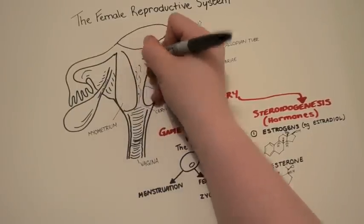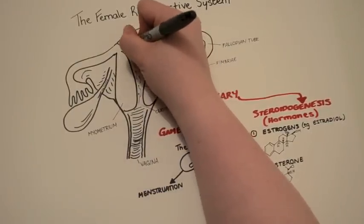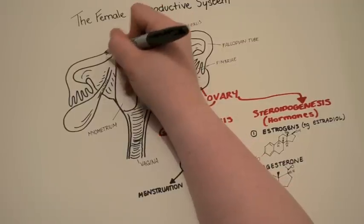Once the male ejaculates, sperm travels through the uterus and into the fallopian tubes, where it meets the ovum.